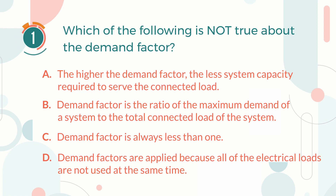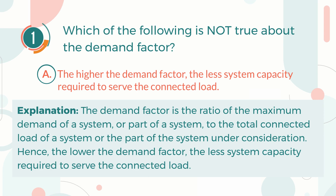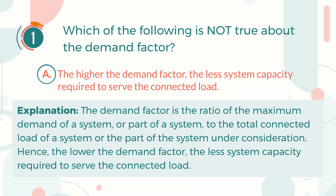The correct answer is A: the higher the demand factor, the less system capacity required to serve the connected load. Explanation: The demand factor is the ratio of the maximum demand of a system or part of a system to the total connected load of a system or the part of the system under consideration. Hence, the lower the demand factor, the less system capacity required to serve the connected load.